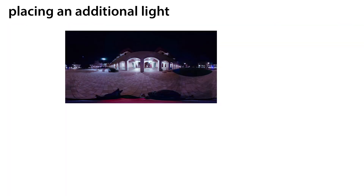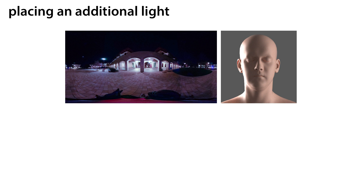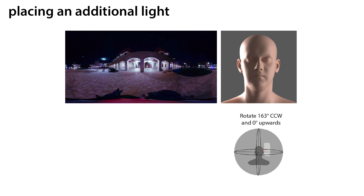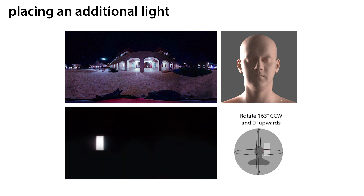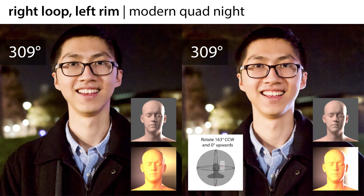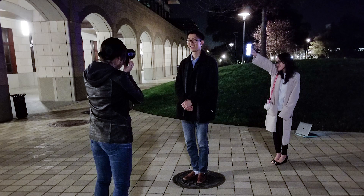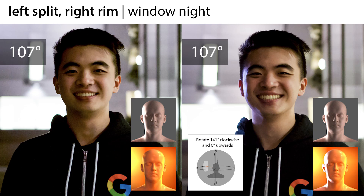In a given environment, some targets, like one that requires light from both sides of the face, are not achievable. In this situation, our formulation can also help place an additional light source like a phone screen to help achieve it. On the left, you see the result without the additional light source, and on the right, with the additional light as a rim light. Here are some more results using an additional light source.